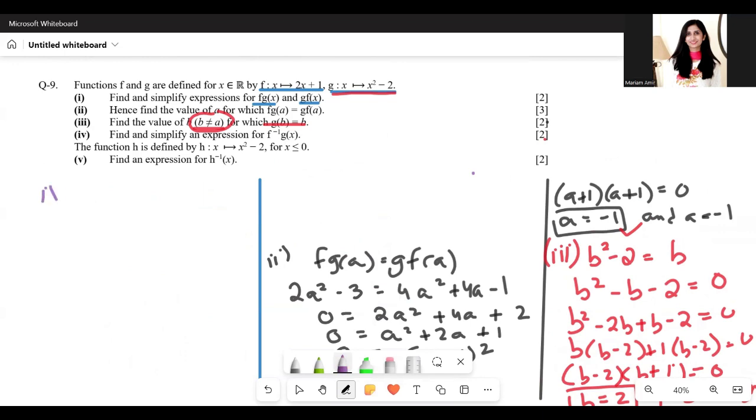So in f inverse, we have to substitute g(x), which is x squared minus 2. But first, we have to find f inverse of x.